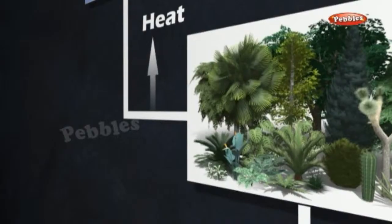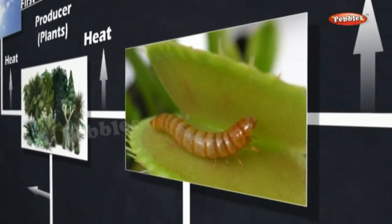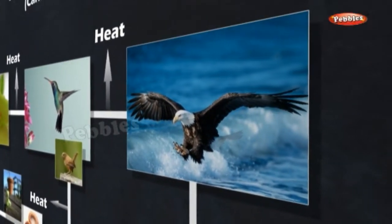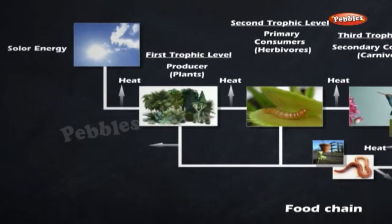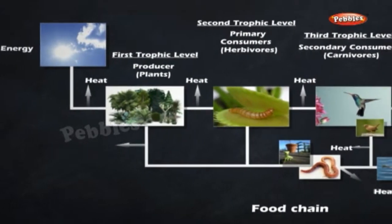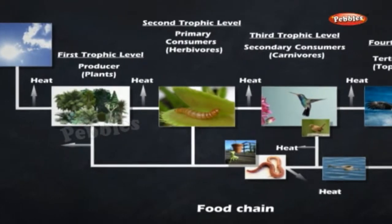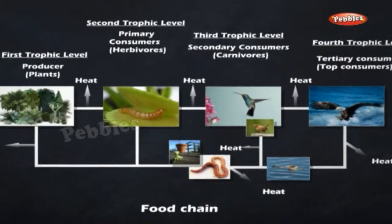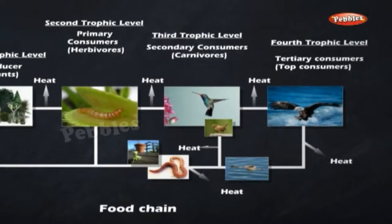Food Chain: The sequential process of food transfer from plants through a series of organisms with repeated eating and being eaten is called a food chain. In simple words, a food chain indicates who eats whom in an ecosystem. A food chain always begins with a producer, followed by a herbivore and then a carnivore. At each step, a lot of energy from food is lost as heat. Therefore, the number of steps in any food chain is limited to four or five. Each step represents a trophic level.